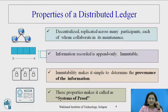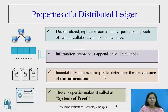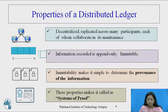What are the properties of a distributed ledger? Decentralized — replicated across many participants, each of whom collaborate in its maintenance. Information recorded is in append mode only, making it immutable. Immutability makes it simple to determine the provenance of the information. These properties make it called a 'system of proofs' — this is an important term.